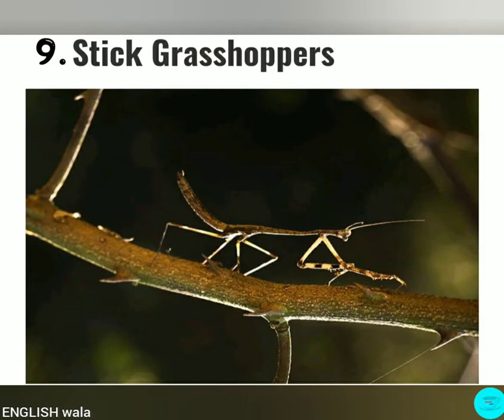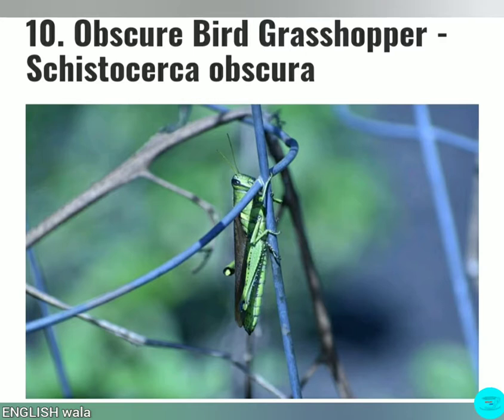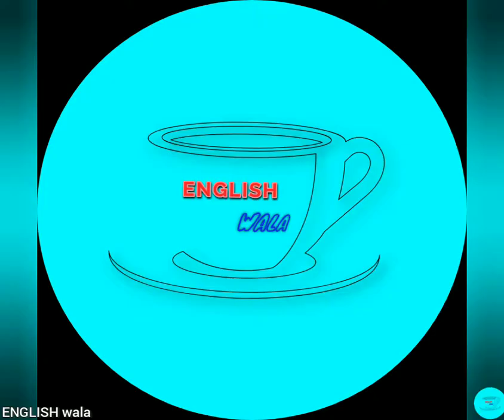They can hide themselves among sticks to prevent being seen by potential predators. Number 10: Obscure Bird Grasshopper. Obscure Bird Grasshopper is mostly found in the United States of America. The color of this grasshopper is green. They can grow up to 3 inches in length and have brown wings. This grasshopper is able to fly and search for food like a bird.